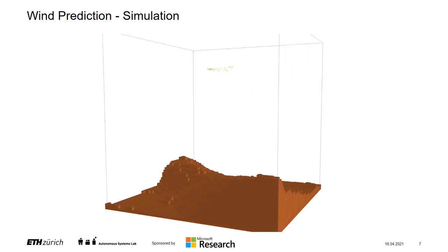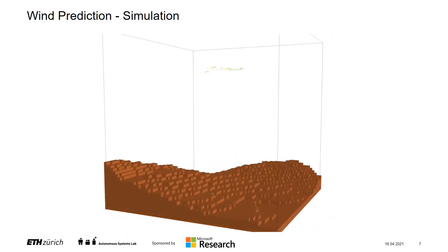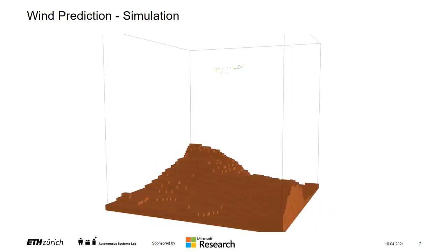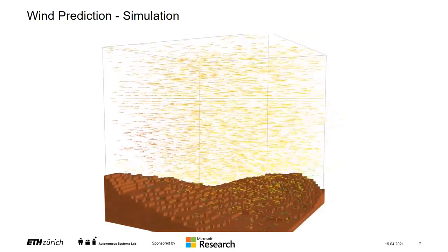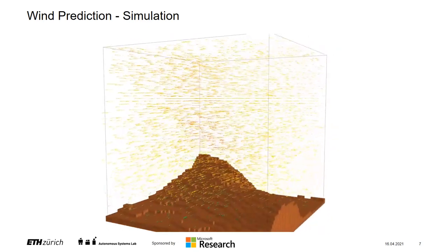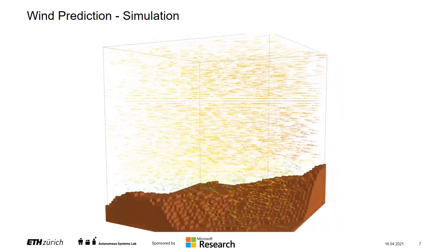The network gets as an input the terrain and a few noisy wind measurements and predicts the wind in high resolution over the full domain. The resulting model learned to predict the flow around complex terrain well using only a few measurements.